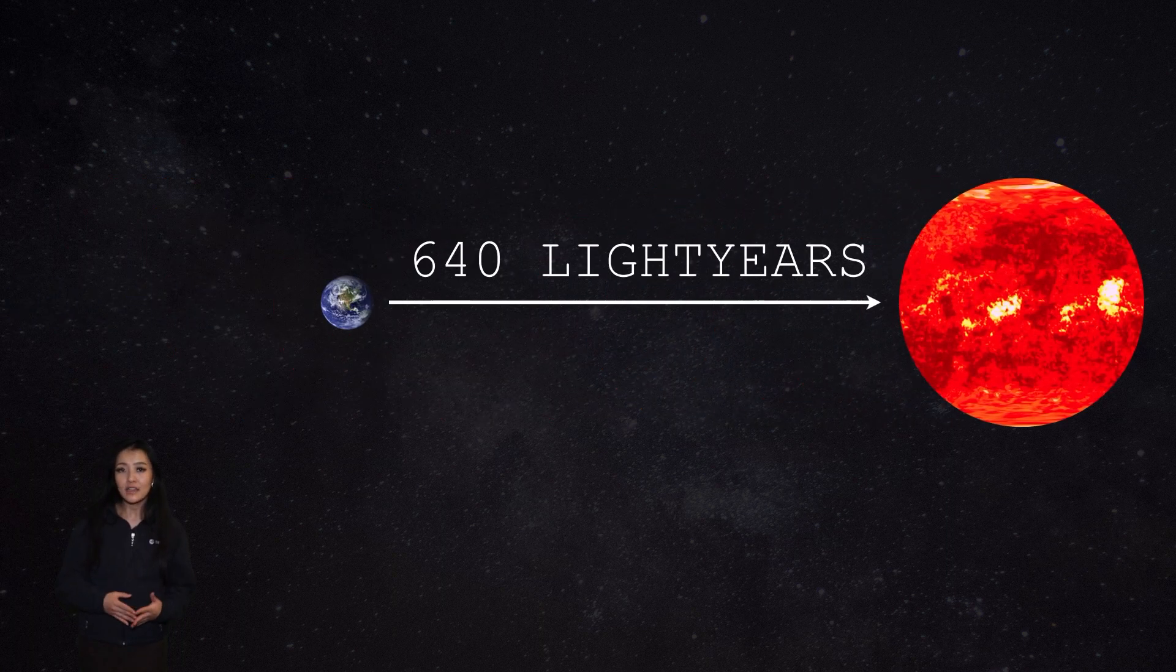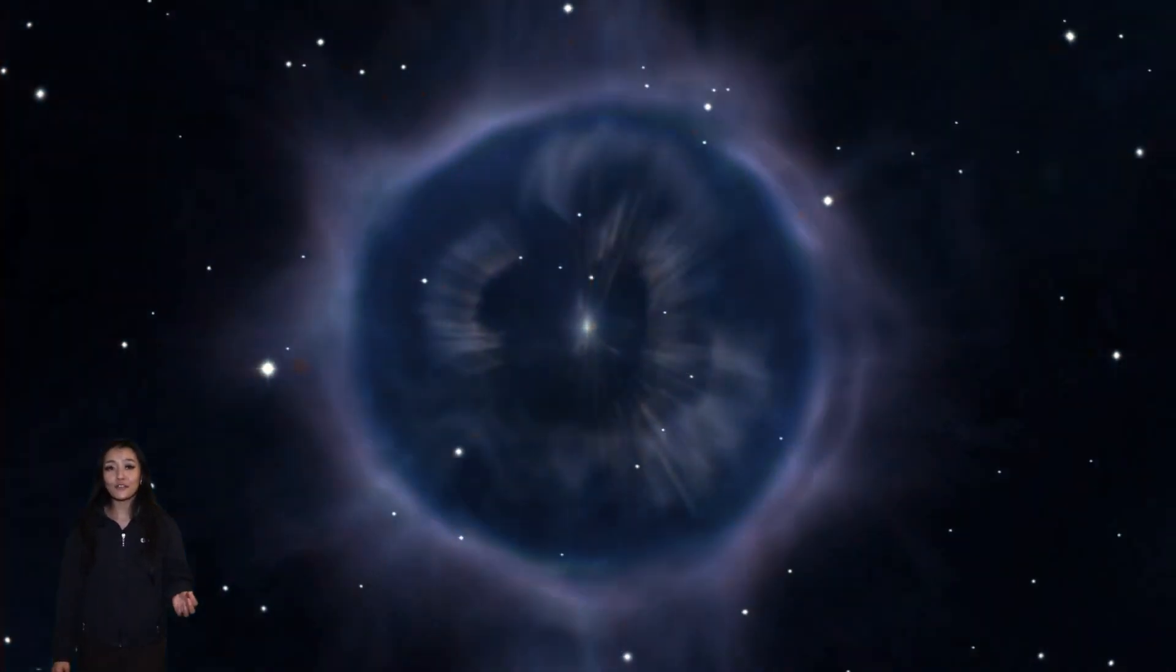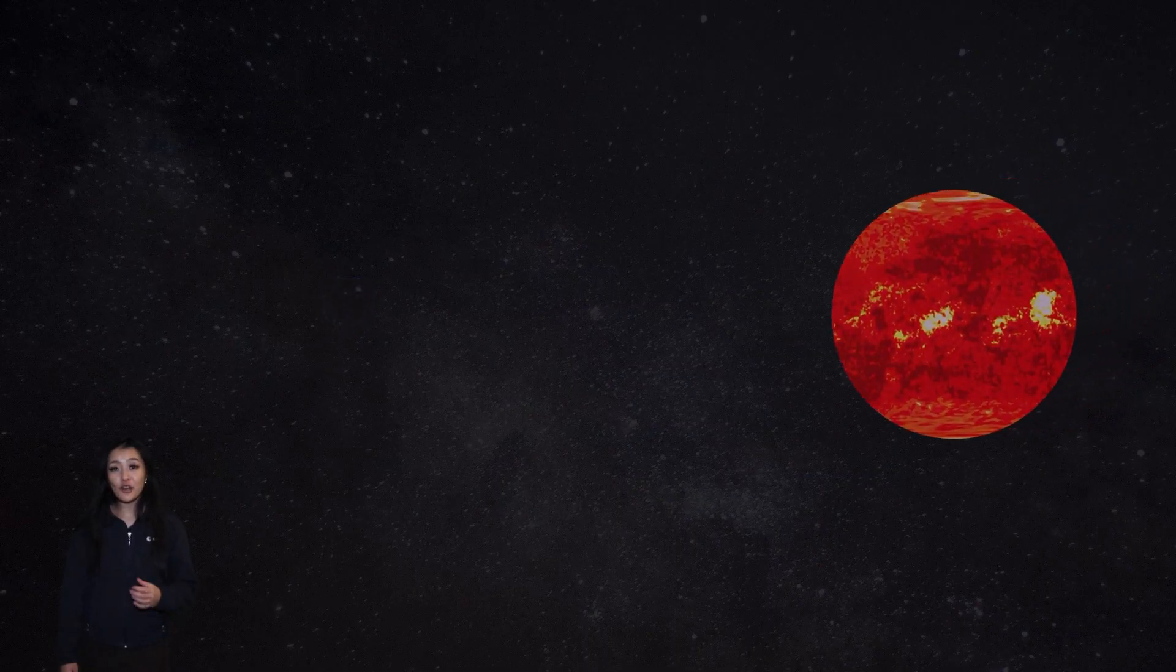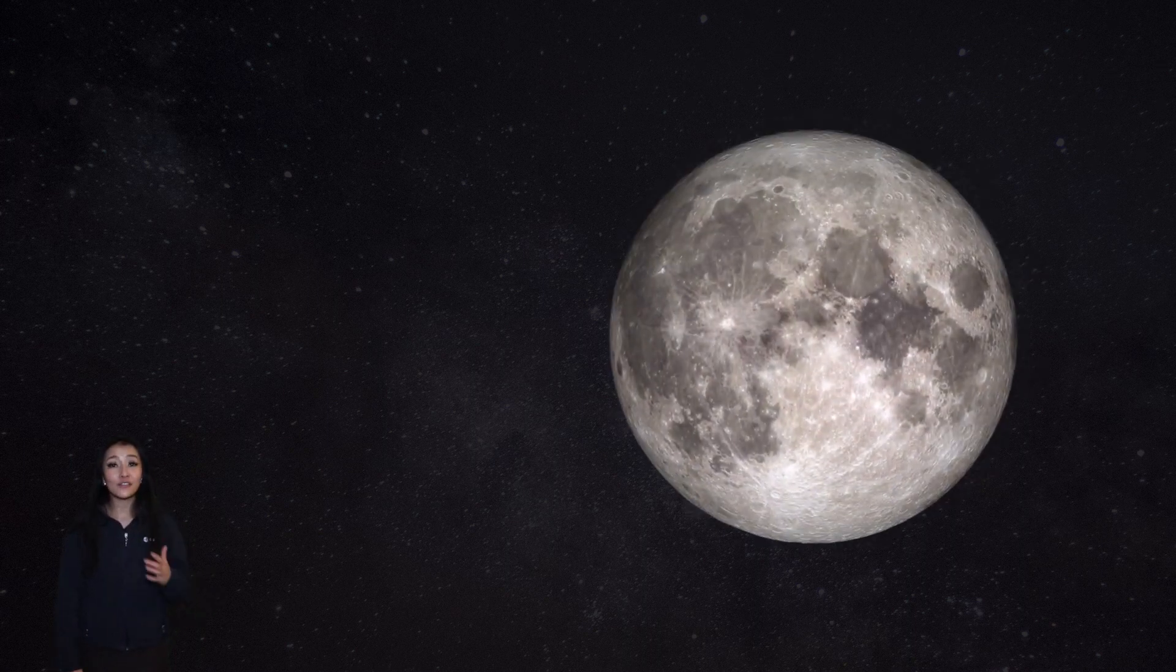Betelgeuse is 640 light years away from us. From the same evolutionary models that predicted Betelgeuse's death, it's believed that when Betelgeuse goes supernova, it will reach an apparent magnitude of minus 12.4 mag. That's brighter than the moon and visible during the day for several months.